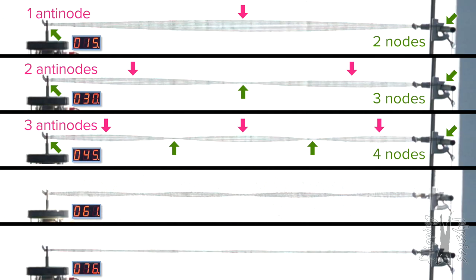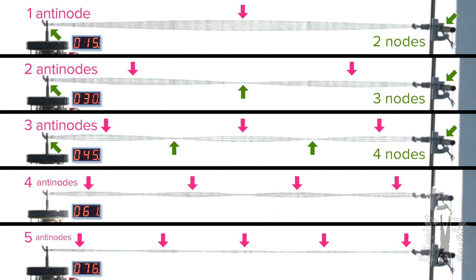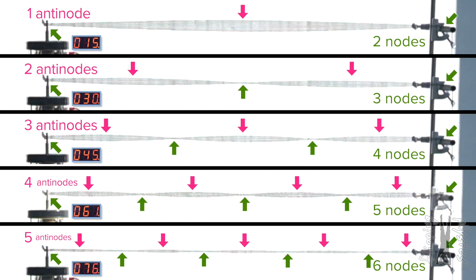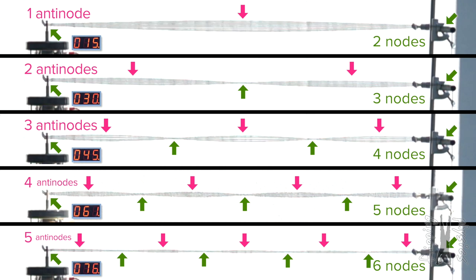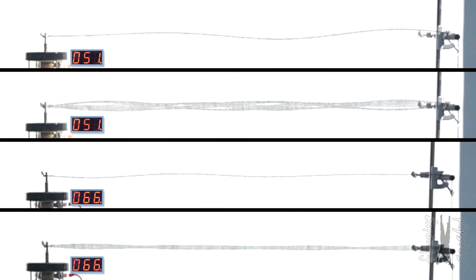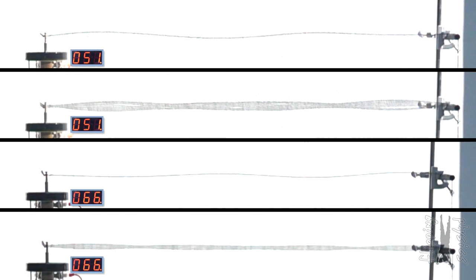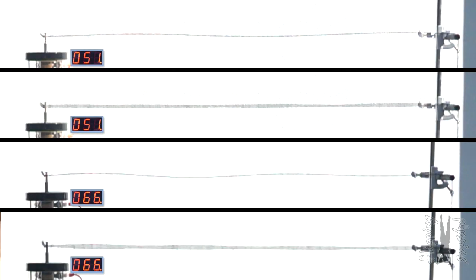Starting at 15 hertz with one antinode and two nodes, we add one antinode and one node for every 15 hertz added to the frequency. It is pretty close to that, although not quite 15 hertz increments — the standing wave pattern is set up at 61 and 76 hertz, not 60 and 75 hertz. The standing wave pattern will not work at other frequencies. Take a look at these two examples at frequencies between those where we set up standing wave patterns — there is no standing wave pattern being created at either of these two frequencies.